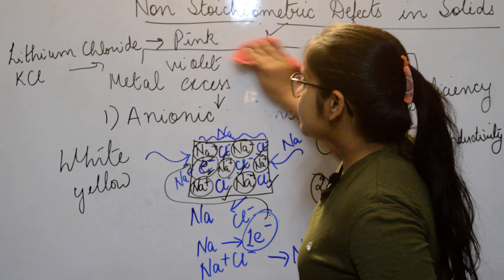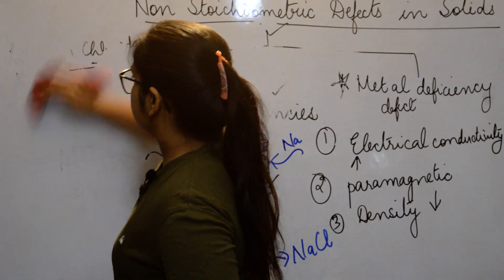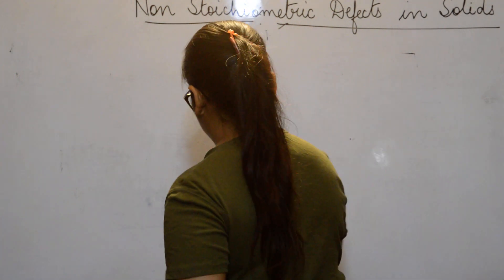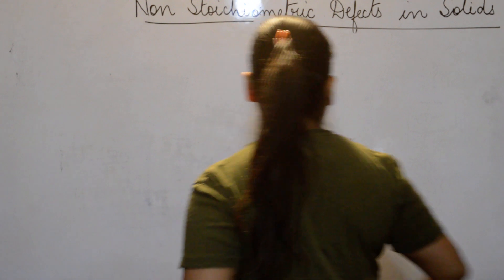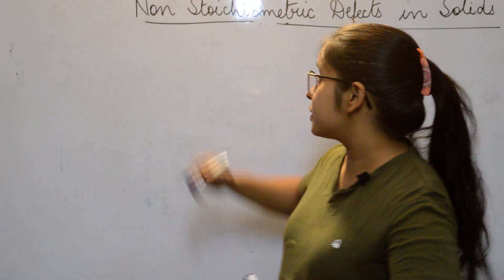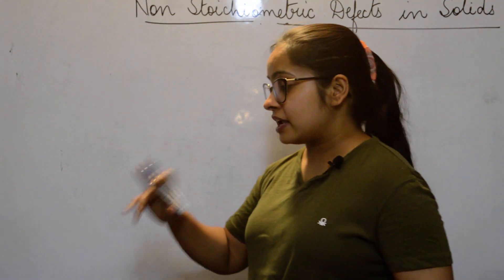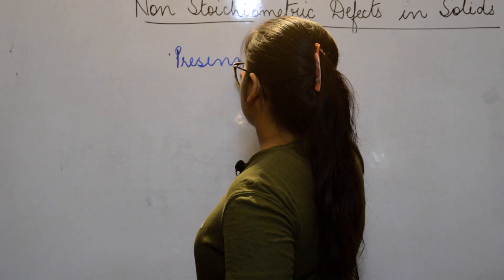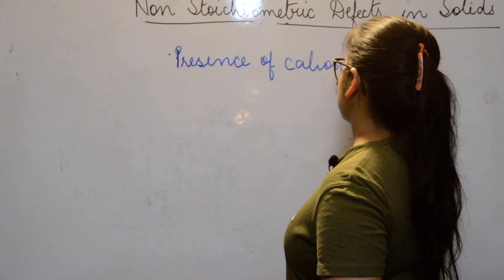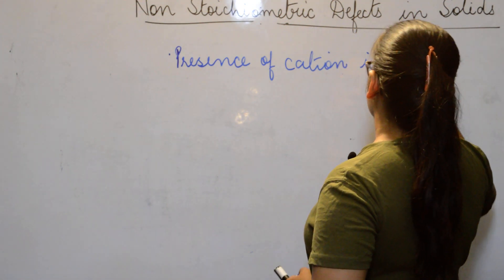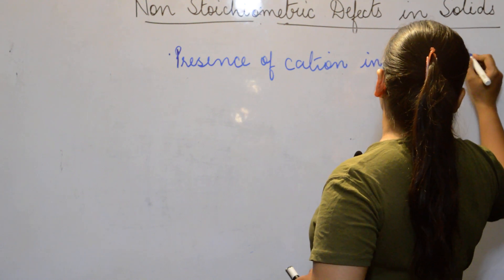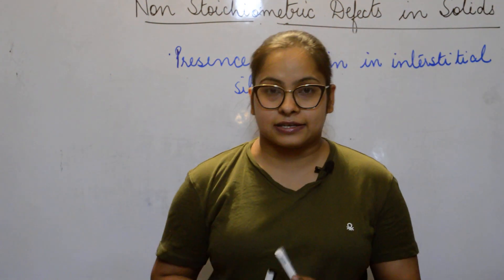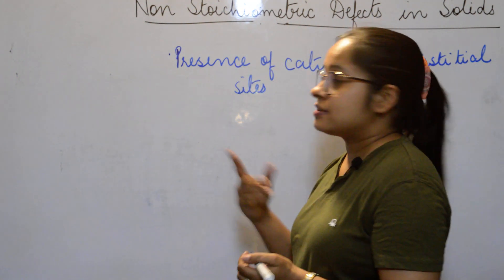Now coming to the second reason for metal excess defect. The first reason was anionic vacancies. The second reason responsible for metal excess defect is the presence of cations in the interstitial sites.